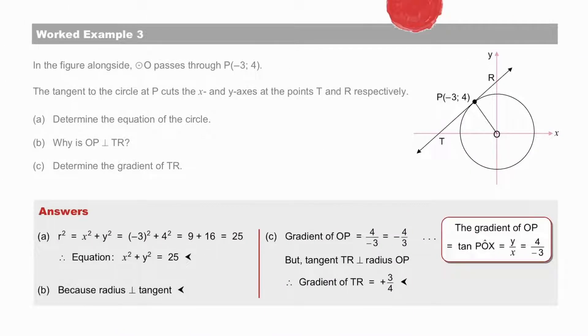Pause to check your answers a, b and c of worked example 3. To determine the equation of the circle, which has its centre at the origin, we need only to find the radius r. And since we have point P on the graph, we substitute r squared equals x squared plus y squared and we get the value of 25 for r squared. Therefore, the equation is x squared plus y squared equals 25.